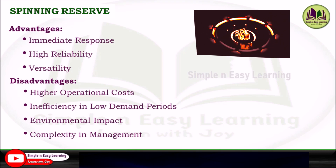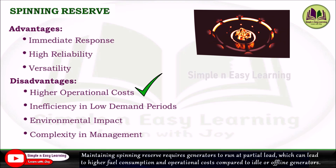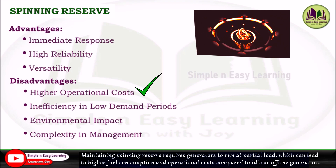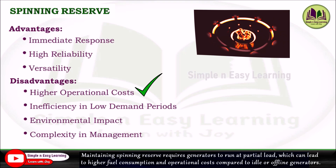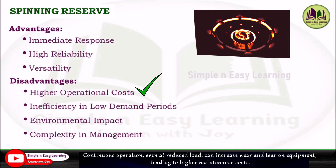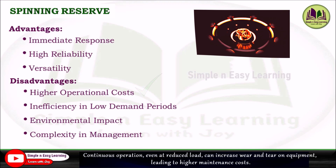Now we will see some disadvantages of spinning reserve. The first is higher operating cost. Maintaining spinning reserves requires generators to run at partial load, which can lead to higher fuel consumption and operating costs compared to idle or offline generators. Continuous operation, even at reduced load, can increase wear and tear on equipment, leading to higher maintenance costs.